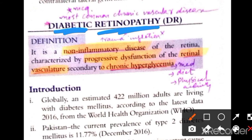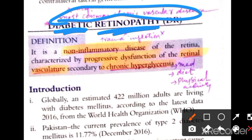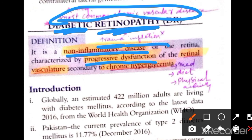Diabetic retinopathy is the most common chronic vascular disease in the retina. It is a non-inflammatory disease — no infection is involved. It is a progressive dysfunction causing damage to the retinal vasculature, because of chronic hyperglycemia causing glucose-related problems in the blood vessels.